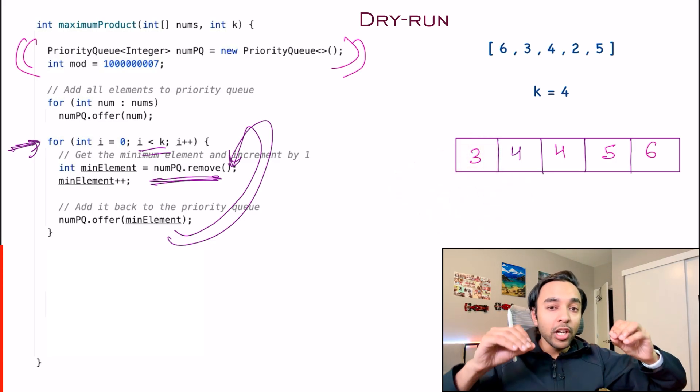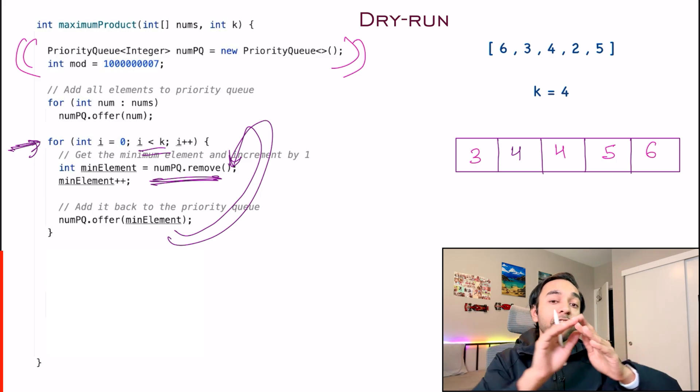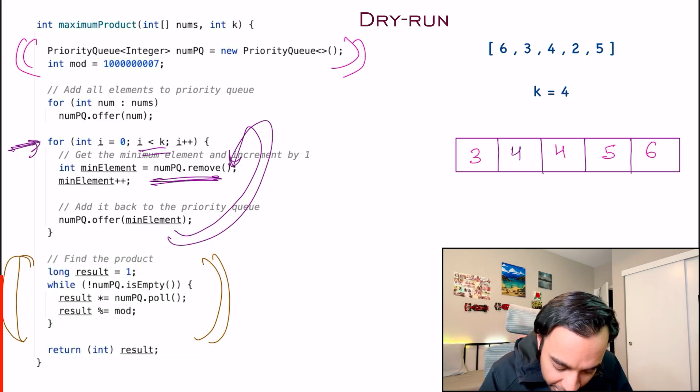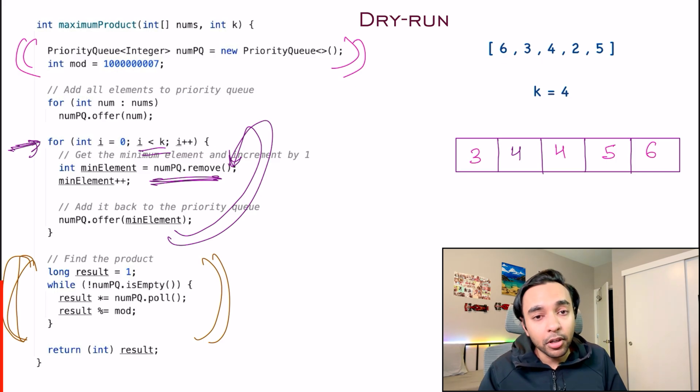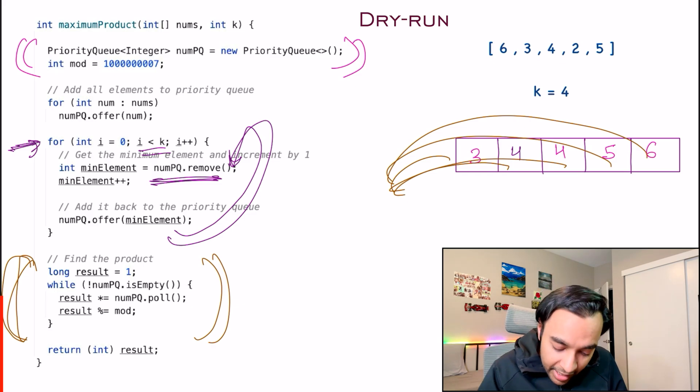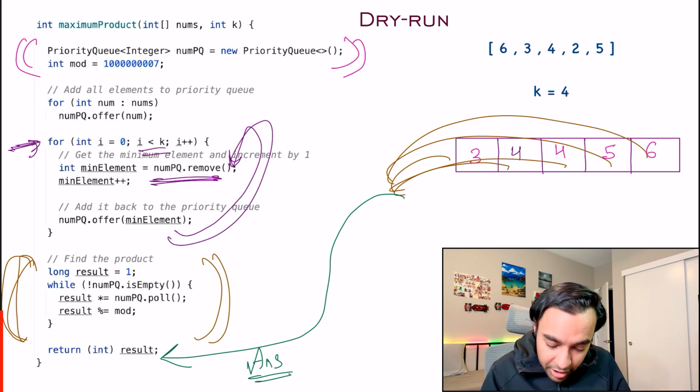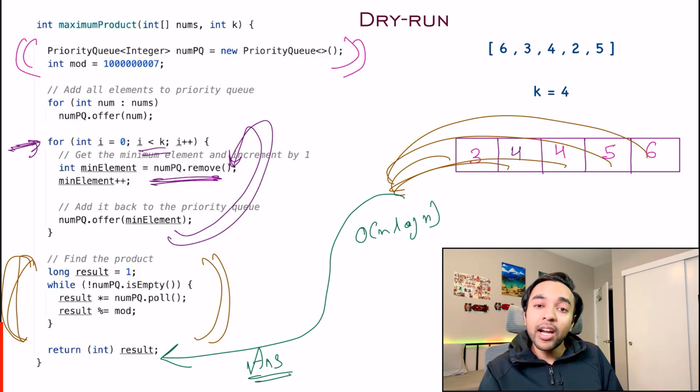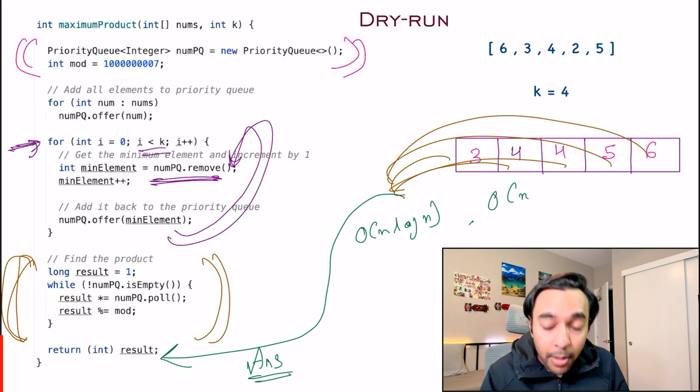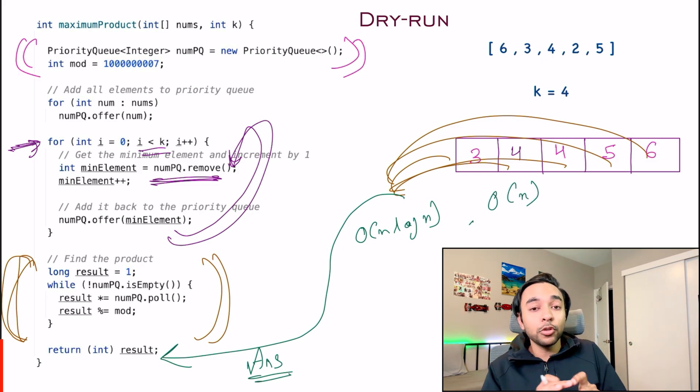And once these k operations have completed, what is your next step? The next step is fairly simple. You just find the product. And to find the product, what will you do? You will keep on popping elements one by one from your queue until it is completely empty. And then ultimately, you will return this result as your answer. Notice that the time complexity of this solution is order of n log n, because you need that time to maintain your priority queue and pop out the minimum element at every instance. And the space complexity of this solution is order of n, because you need that extra space to maintain your priority queue.